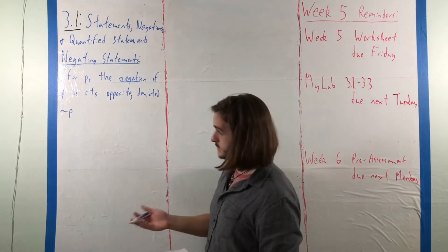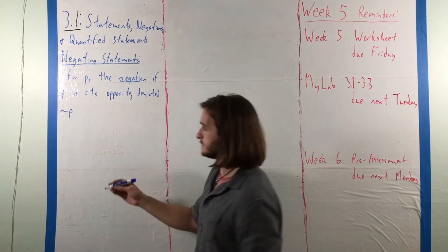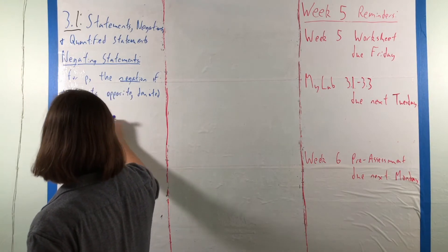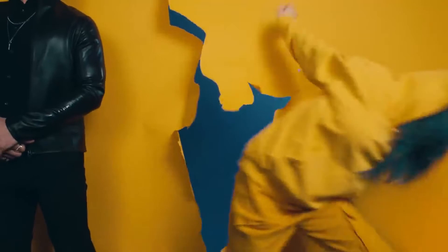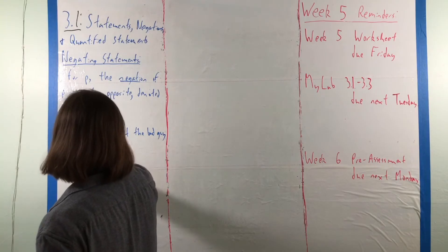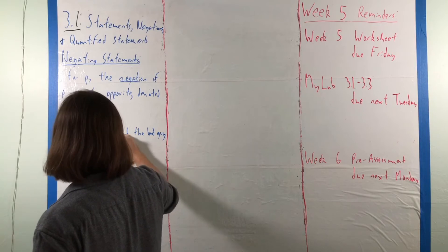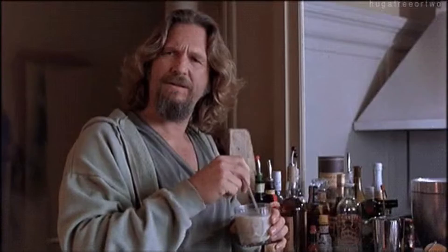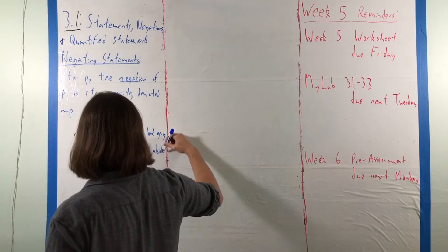So, for our previous examples, we could write that tilde P is the statement 'I am not the bad guy', and for tilde Q, you could say 'the dude does not abide'.